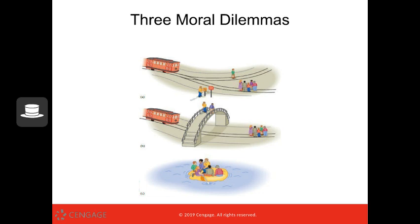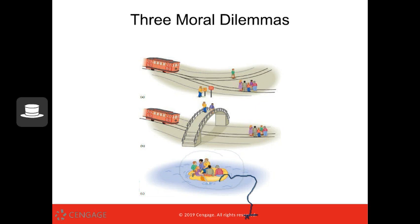Same dilemma, different situation: you are one of six people on a life raft that can only hold five — otherwise it will deflate and sink. Do you push somebody off the life raft to save the five, including yourself? Now that you might die because of one extra person, does that change your moral decision-making? Now that you are the beneficiary of being saved, do you justify your behavior? There's no right or wrong answer, but this helps us understand the important role emotions play in decision-making.